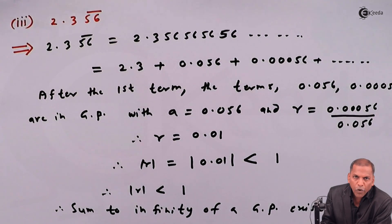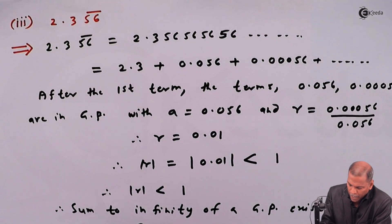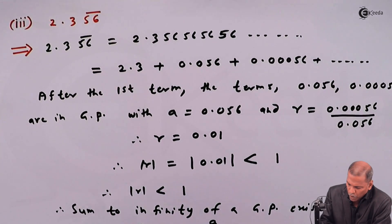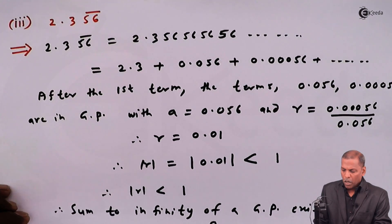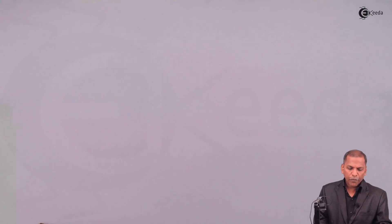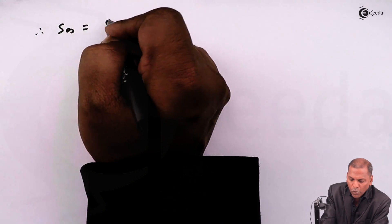And therefore we have a formula that s infinity is equal to a upon 1 minus r. Now for a we substitute the value 0.056 and for r we substitute the value 0.01.